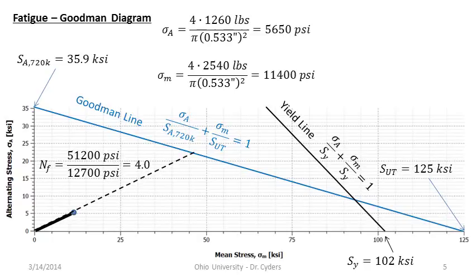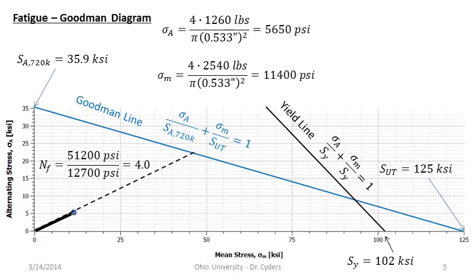Assuming mean and alternating stress are related according to the ratio from 0 to 1,260 alternating and 0 to 2,540 mean, we calculate the slope of this line through the origin. The length from the origin to the Goodman line intersection is 51,200 psi, and the length from the origin to our operating point is 12,700 psi, giving a factor of safety slightly lower. Because the two stresses are related, variability in one automatically brings variability in the other, which brings us closer to the envelope — so you need to weigh the situation realistically.